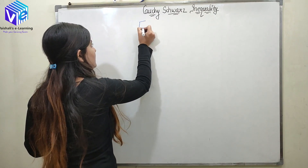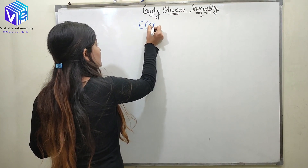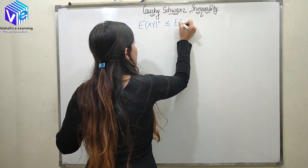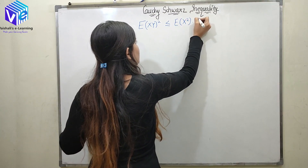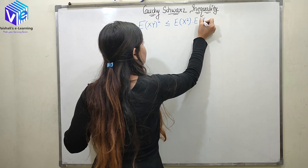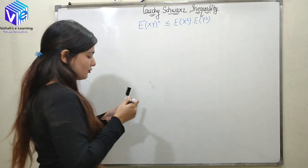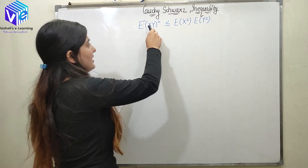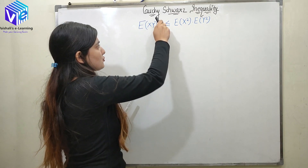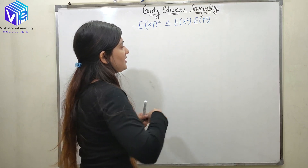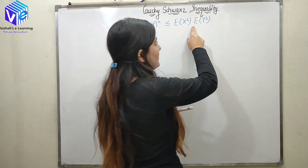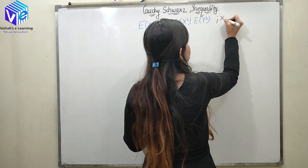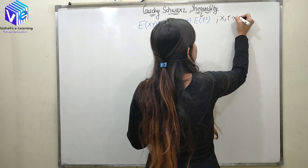According to Cauchy-Schwarz's inequality, E[XY]² is less than or equal to E[X²] multiplied by E[Y²]. So the expectation of random variable XY, squared, is less than or equal to expectation of X² multiplied by expectation of Y². Here, X and Y are my random variables.